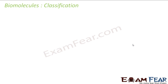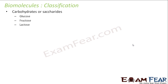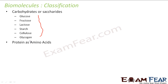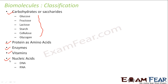Let's understand the classification of biomolecules. The first is carbohydrates, also called saccharides, because they are sweet — the word saccharide came from a Greek word meaning sweet. We will discuss glucose, fructose, lactose, starch, cellulose, and glycogen. We'll also talk about proteins, which are made up of many amino acids combined. We'll discuss enzymes, vitamins, and nucleic acids. In nucleic acids we'll talk about DNA and RNA. So the whole biomolecules chapter covers carbohydrates, proteins, enzymes, vitamins, and nucleic acids.